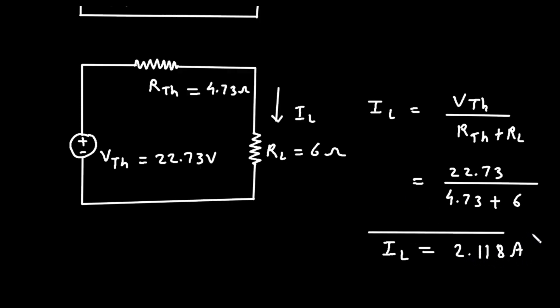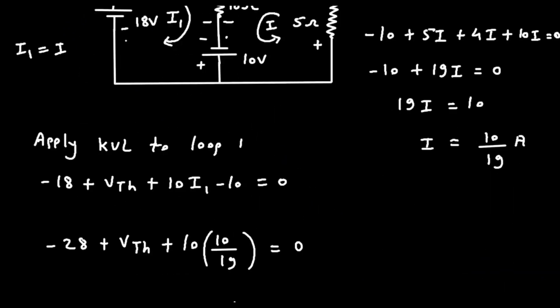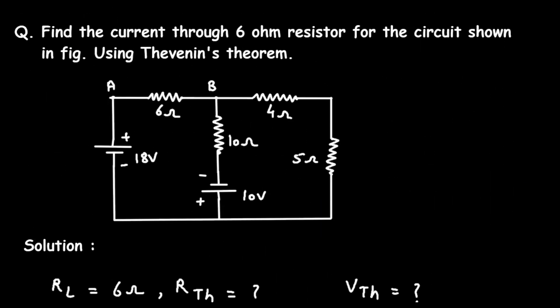The current through the 6 Ohm resistor is 2.118 Ampere. This is how we can find the current through the 6 Ohm resistor by using Thevenin's Theorem.